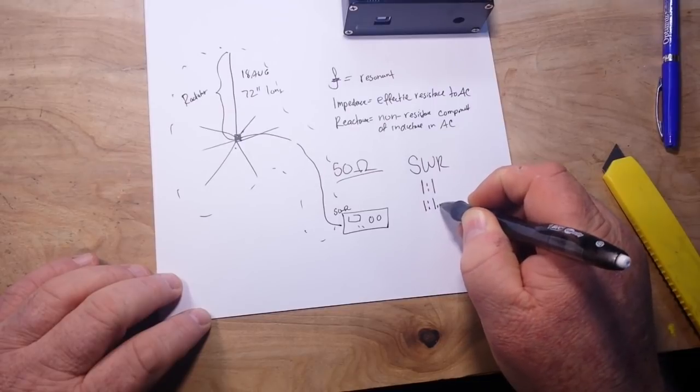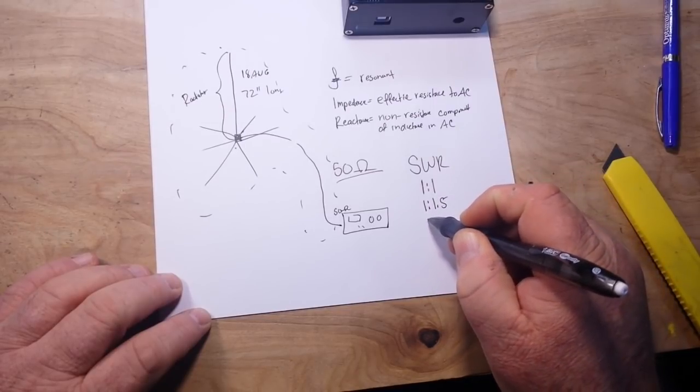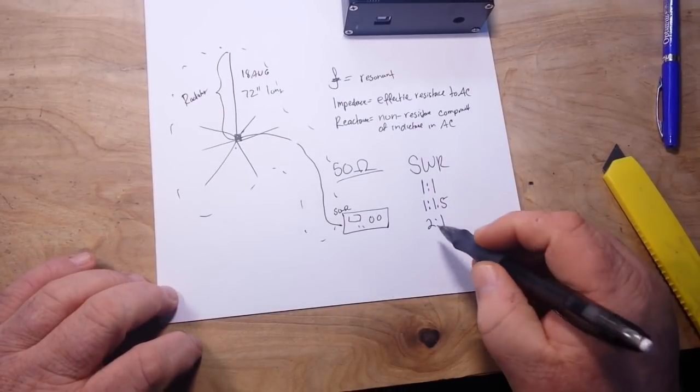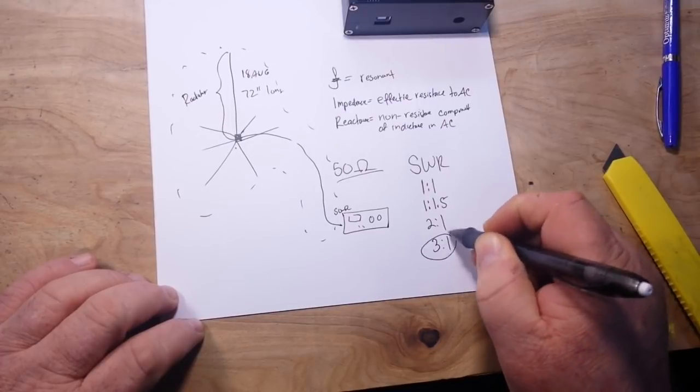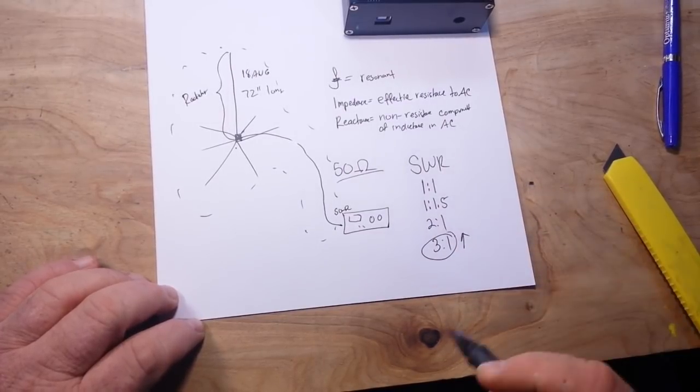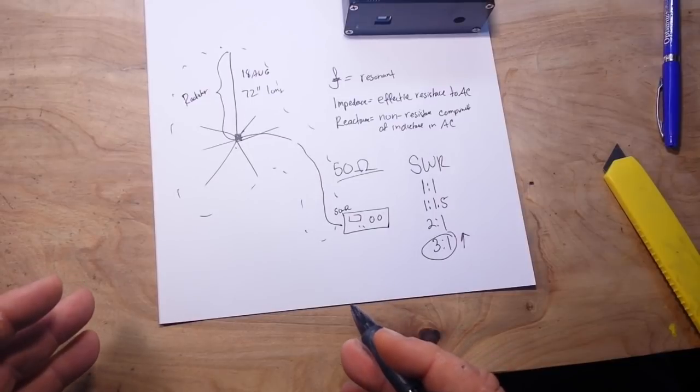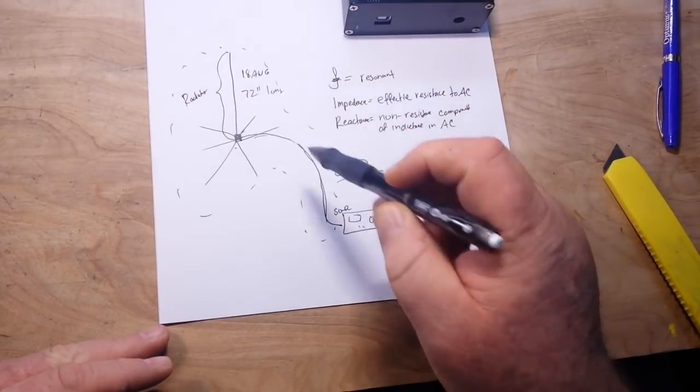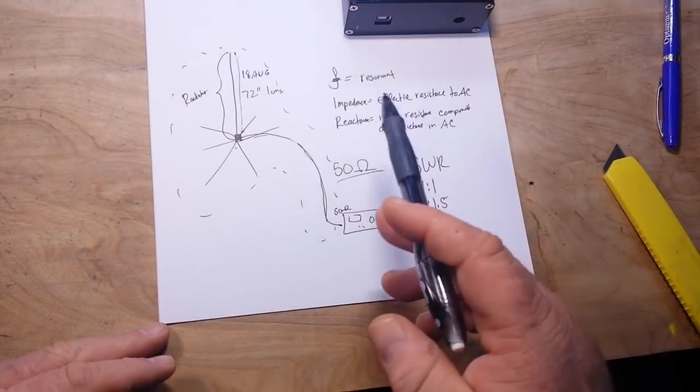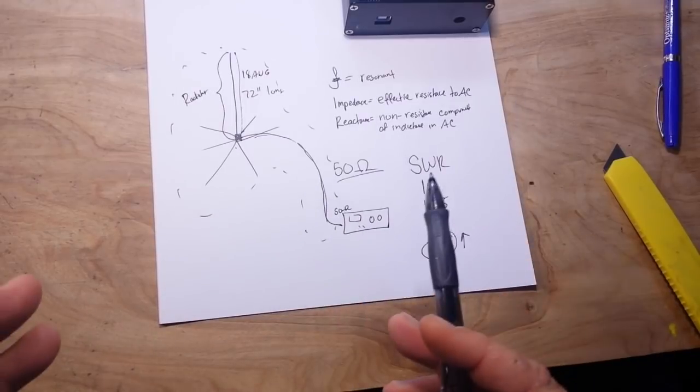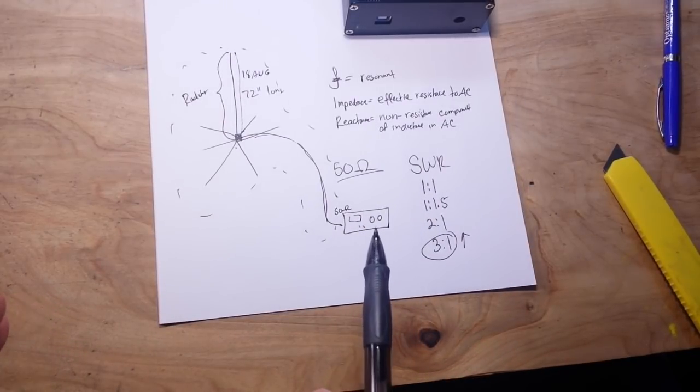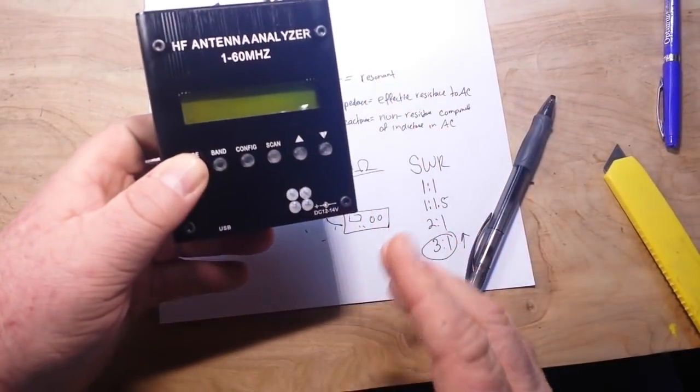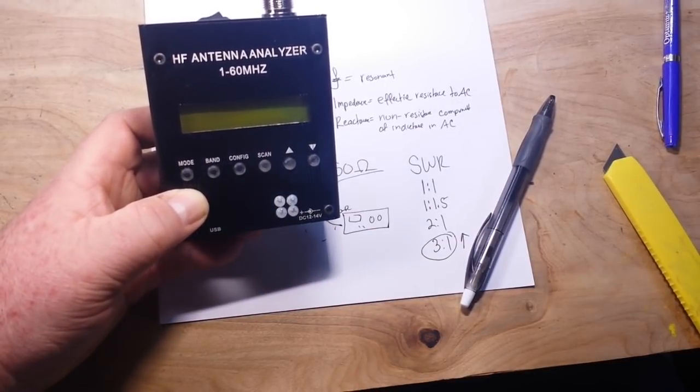Now also acceptable is 1.5 to one and even two to one. Those are all acceptable. When you start getting up to three to one and above, then you have a problem. And you can adjust that through various means, including the length of the feed line, the length of the radiator. You can also use antenna tuners to adjust it. But we need to have a measurement of where we're at. And that's where an antenna analyzer comes into play.